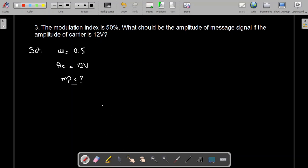Now we know that modulation index is equal to MP divided by A, which implies that MP equals mu multiplied by A.